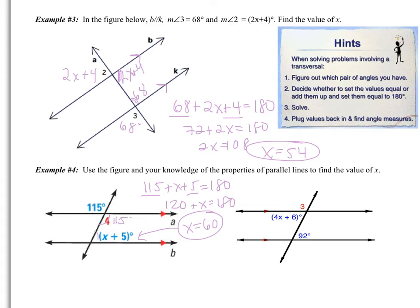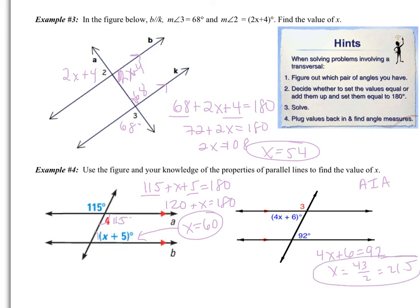Pause the video and try the next problem on your own. First identify what type of angles you have — consecutive interior, alternate interior, or alternate exterior — then use that property to set up an equation. The angles here are alternate interior angles (AIA): on different sides of the transversal but both inside the two lines. Alternate interior angles are congruent, so: 4x + 6 = 92. Solving gives x = 86/4, which equals 21.5.